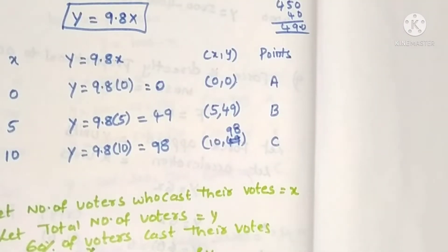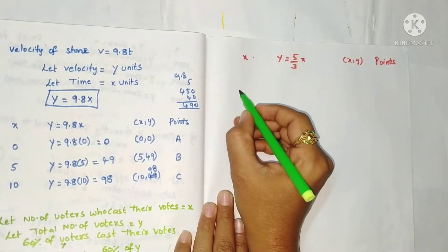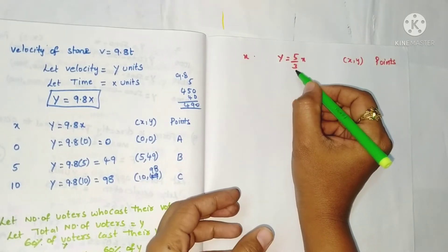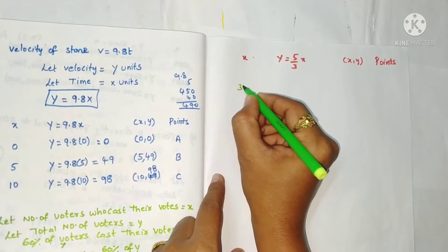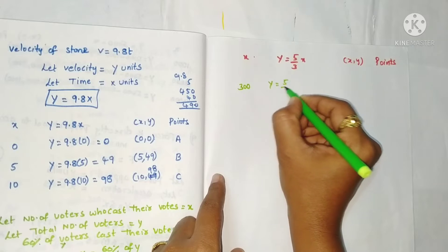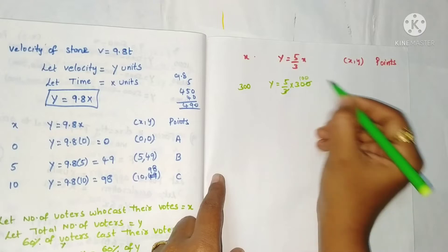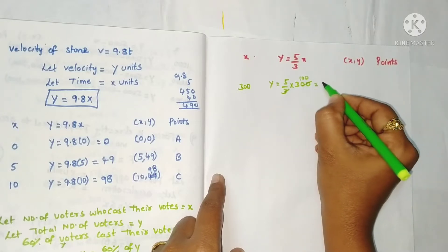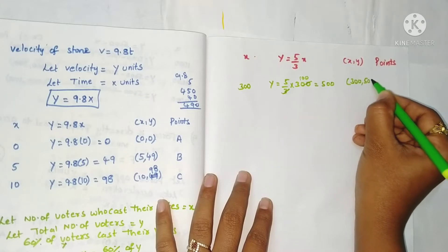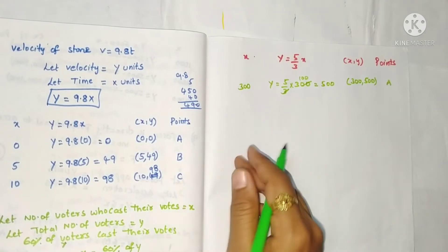Now we want to find the points. We'll take multiples of 3 so cancellation is easy. First, if x is 300, then y equals 5/3 × 300 = 500. So the first point is (300, 500), which is point A.